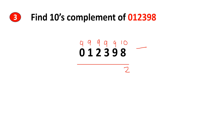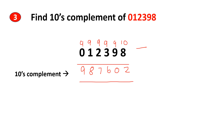Then for the rest of the digits, we subtract from 9: 9 minus 9 is 0, 9 minus 3 is 6, 9 minus 2 is 7, 9 minus 1 is 8, and 9 minus 0 is 9. This is the 10's complement of the given decimal number.